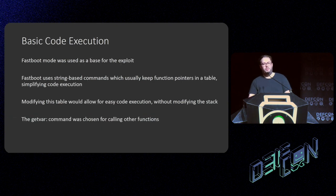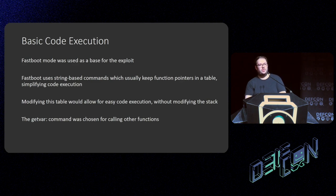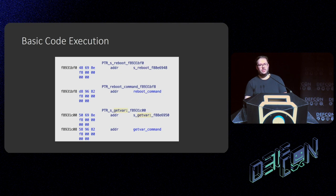Fastboot mode was used as the basis of this exploit because it uses string-based commands for all its administration. In bootloaders using fastboot, there will be a table of strings for the commands themselves and then pointers to specific functions, usually stored in writable RAM. By modifying this table, I could have easy code execution without modifying the stack or doing other complex things. I found fastboot in this instance only had two commands: `getvar`, which retrieves system variables, and `reboot`. I chose `getvar` because it was easier. The table has an array: address pointing to the string 'reboot', then address pointing to the function itself. Even if stack canaries were in place, they wouldn't be a problem because I was loading in addresses directly and executing them.